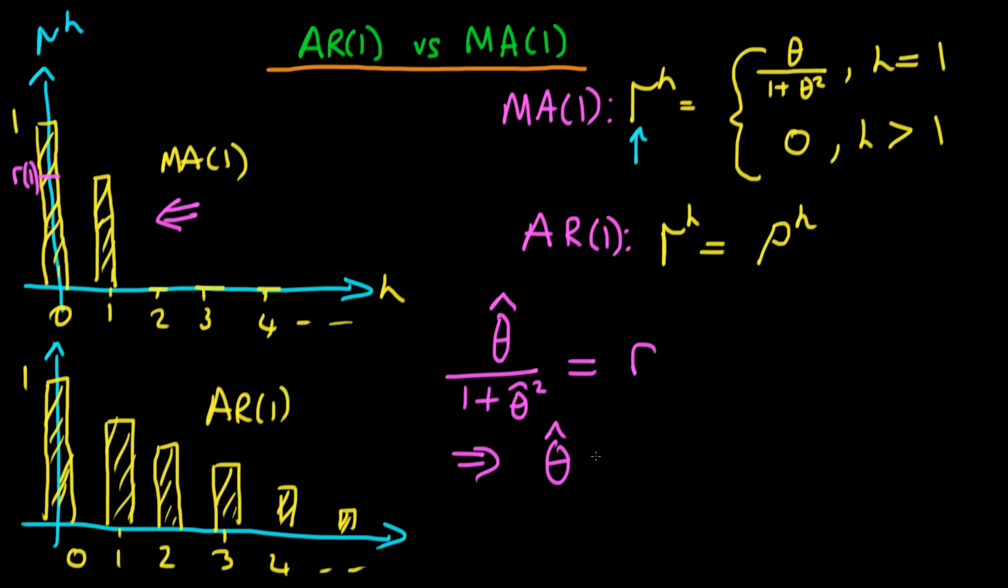And we find that theta hat is equal to 1 plus or minus the square root of 1 minus 4 R squared, all divided by 2 R. So it kind of suggests that there might be two solutions, but in fact it turns out there's only one solution which is the 1 minus this square root term here.